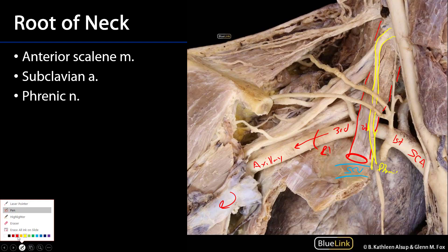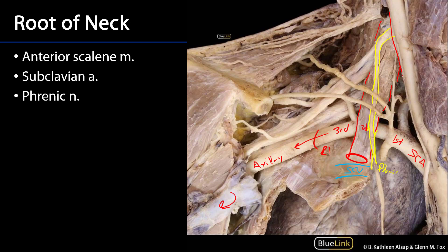Lateral to this, we can also see the common carotid artery, which is found within the carotid sheath along with the vagus nerve. As this is the right side — a right subclavian — it's here that the right vagus nerve is going to send the right recurrent laryngeal nerve around the subclavian artery, heading up towards the larynx.